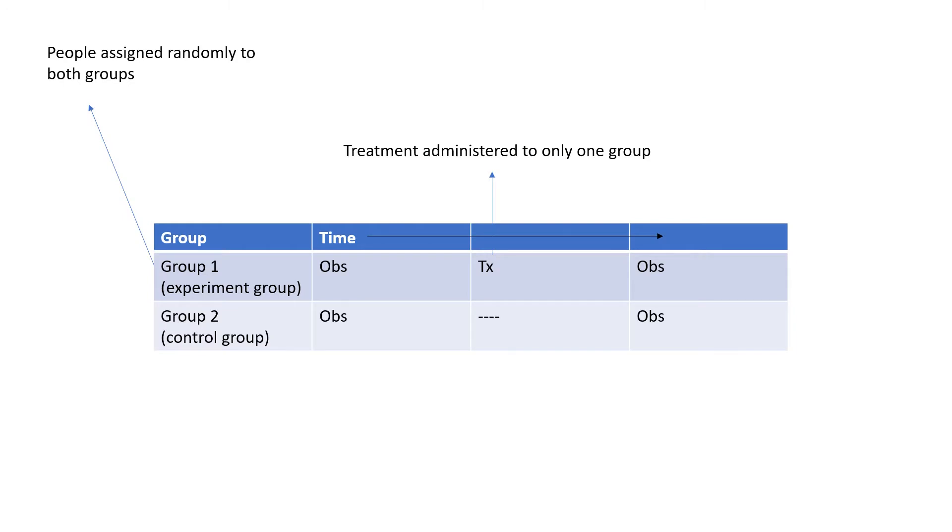So in pre-test post-test, we have two groups in which people are randomly assigned to either an experimental group or a control group. The experimental group is observed, subjected to the experimental treatment, and observed again. The control group is isolated from any influences of the experimental treatment; however, it is observed at the beginning and at the end of the experiment.